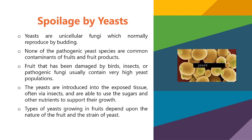Spoilage by yeast: yeasts are unicellular fungi that normally reproduce by budding. None of the pathogenic yeasts contaminate fruit — all yeasts contaminating fruits or vegetables are non-pathogenic. Fruits can be damaged earlier by birds, insects, or pathogenic fungi, and they contain a very high yeast population. Yeasts are introduced into the exposed tissue by insects and are able to use the sugar and other nutrients to support their growth. The types of yeast growing in the fruit depend on the nature of the fruit and the strain of the yeast.